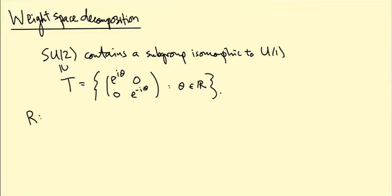So if I have a representation R of SU2 on some vector space V, then I can restrict it to the diagonal matrices and I get a representation R restricted to T going from T to GL(V).